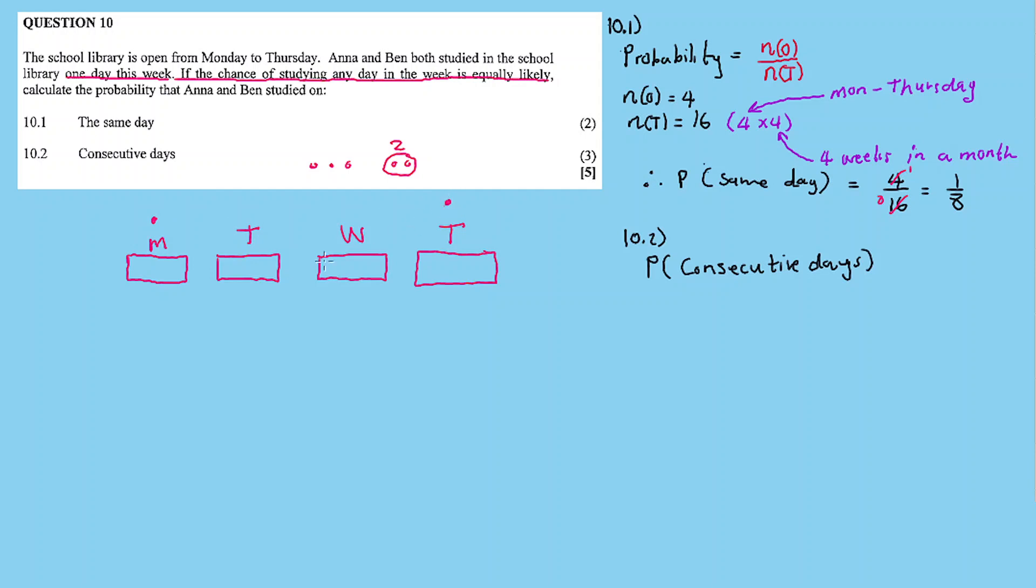In the week from Monday to Thursday, there are consecutive days: Monday to Tuesday, that's one; Tuesday to Wednesday, that's two; and Wednesday to Thursday, that's three. Meaning from Monday to Thursday there are three consecutive day pairs.